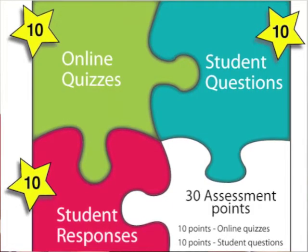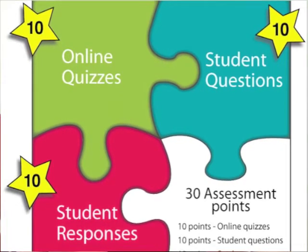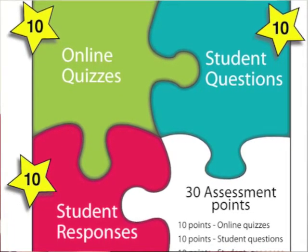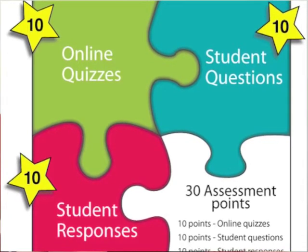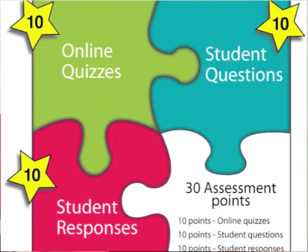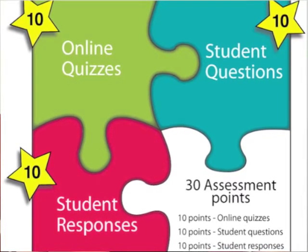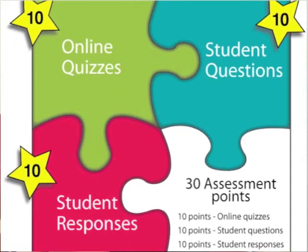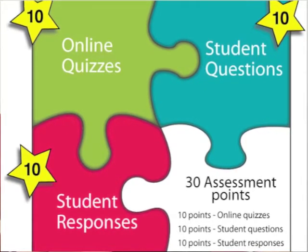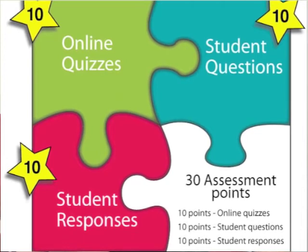Ultimately the unit was structured so that there were 30 assessment points in a semester: ten online quizzes that were automatically marked, ten required student questions, and ten required student responses. So in some ways we were now looking at not just the questions and answers, although that was a very important part of the unit, but also the online quizzes.